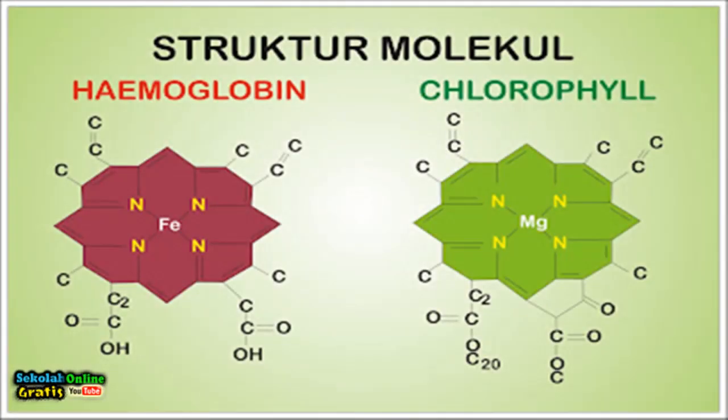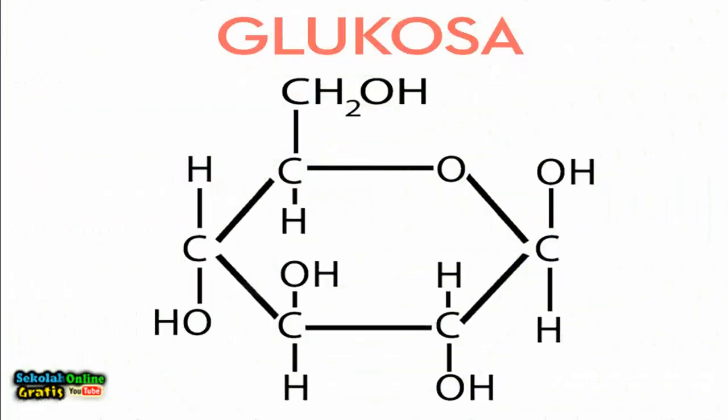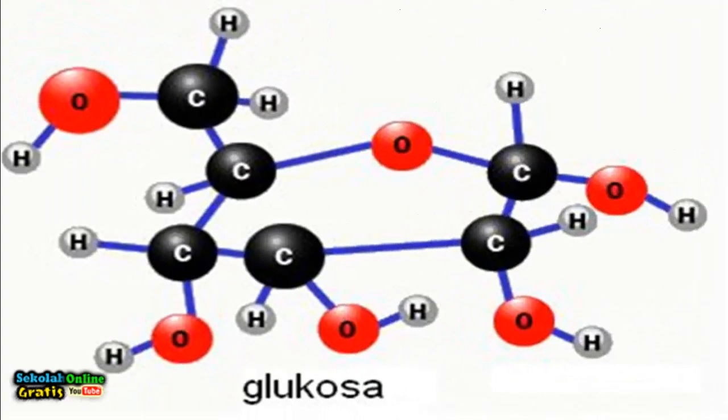Chloroplasts consists of chlorophyll molecules which have the following structure. Chlorophyll is a compound composed of several atoms including carbon C, hydrogen H, oxygen O, nitrogen N and magnesium Mg. Glucose has the constituent atoms of hydrogen, oxygen and carbon.